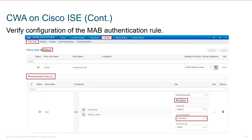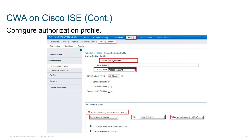You can verify configuration of the MAB authentication rule here. Our authentication policy set is for MAB and supports both wired and wireless. Notice: if auth fails, reject; if user is not found, continue. So we get a MAC address, try to look it up using the MAC address as username and password. If that user doesn't exist, we continue and look further through our policy.